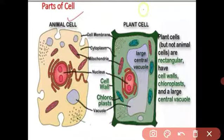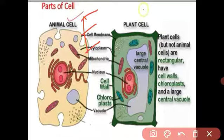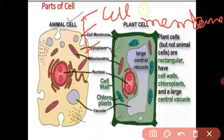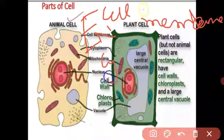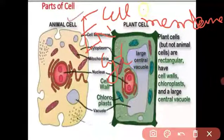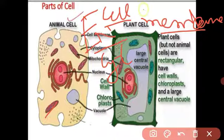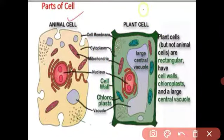There are many organelles present in the cell, but three most essential organelles are present in each and every cell: cell membrane, nucleus, and cytoplasm. Even in organisms like bacteria and amoeba, these three parts are fundamental. Other organelles like mitochondria, chloroplast, and Golgi bodies are also present, but cell membrane, nucleus, and cytoplasm are the three essential parts.